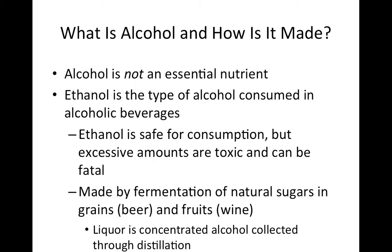Alcohol is not considered an essential nutrient, meaning you could survive your entire lifetime without ever touching a drop of it. The main type of alcohol adult humans consume is ethanol, the main form found in most alcoholic beverages. It is safe for consumption, but in excessive amounts can lead to toxicity, be fatal, and cause severe social and dependency effects. It's typically made by fermentation of natural sugars in grains, making beer or malt beverages, or fermentation of sugars in fruits like grapes for wine. Hard liquor is concentrated alcohol collected through distillation after fermentation.